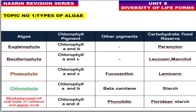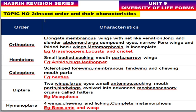The next topic is insect orders and their characteristics. Five insect orders are very important for the CSIR NET examination. Orthoptera — examples include grasshopper, locust, and cricket. Insects in this order have elongated membranous wings with a net-like venation, a long and slender abdomen, large compound eyes, narrow forewings, and hindwings that are folded. They have incomplete metamorphosis.